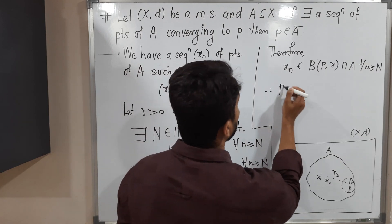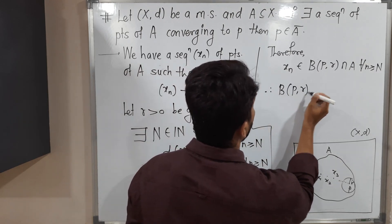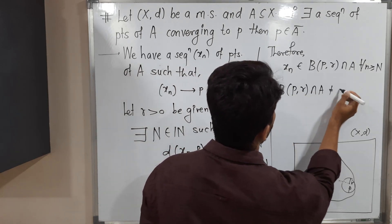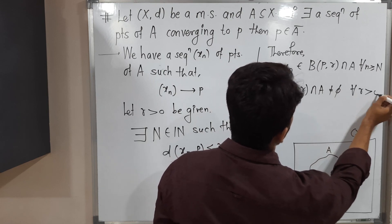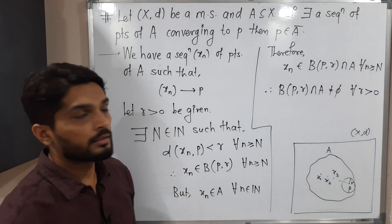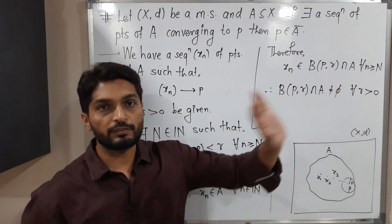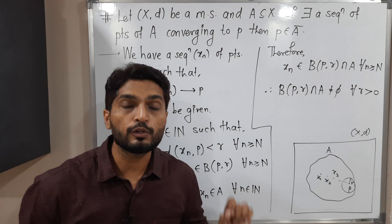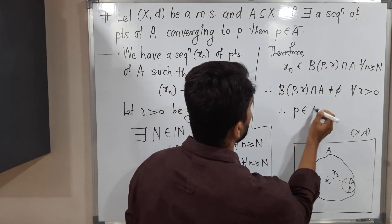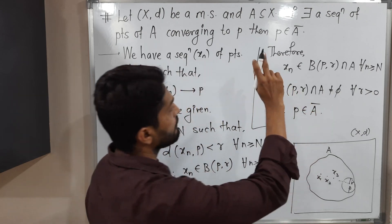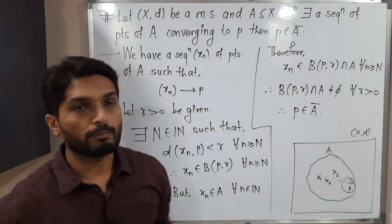Therefore, B(P,R) intersection A is not equal to phi for all R greater than 0. I should write this since R is arbitrary. So the intersection is non-empty for every R greater than 0. This is the definition of a closure point. Therefore, we can declare that P belongs to A bar. In this way, we proved that P belongs to A bar. Proof is over.